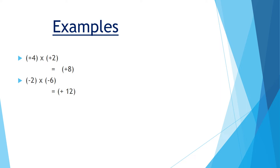Next one is plus 3 into minus 5. Here one is positive and the other one is negative, so as per the golden rule the sign will be negative. And the product of the two numbers — 3 fives are 15 — so the answer will be minus 15. Next one is minus 6 into 4. If any sign is not given, that means it is positive. So minus 6 into plus 4: 6 fours are 24, and minus into plus is minus, so the answer is minus 24.